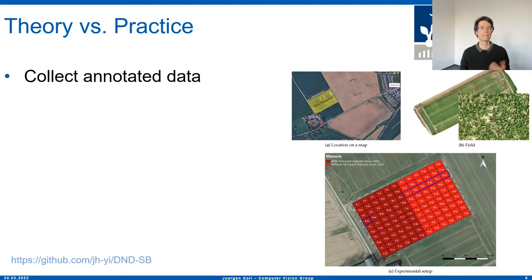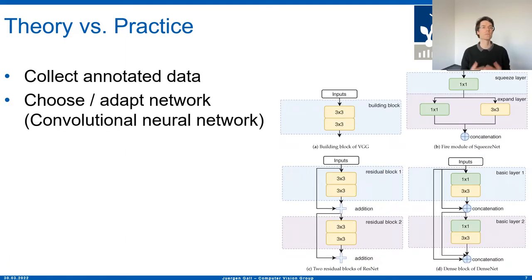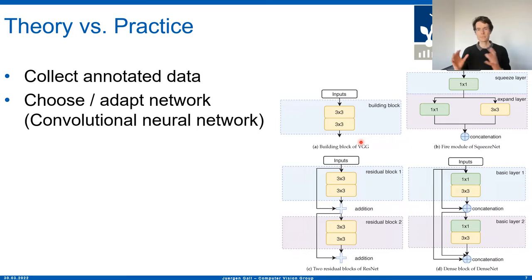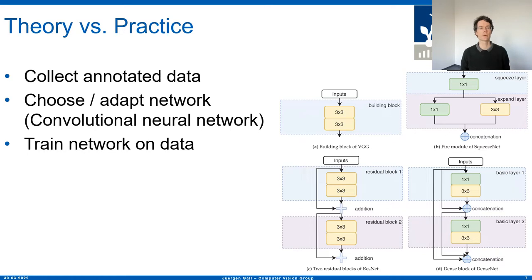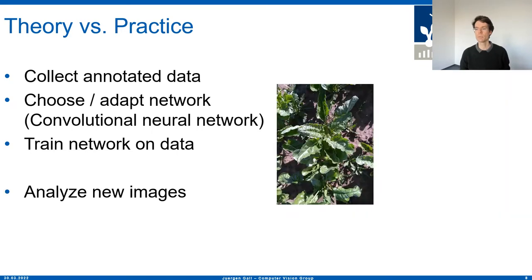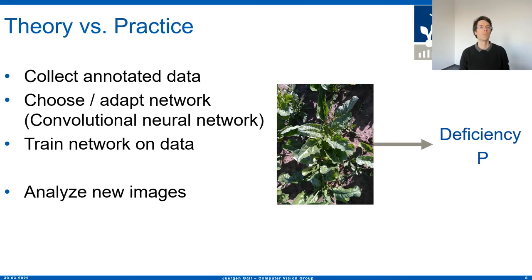Having collected the data, the next step is choosing what kind of network to use. A neural network is nothing else than a combination of many building blocks. You choose a network, adapt it a little bit, and then train it on the data you have collected. Once trained, when you get a new image of a sugar beet, the network makes a prediction about what nutrient is actually missing.